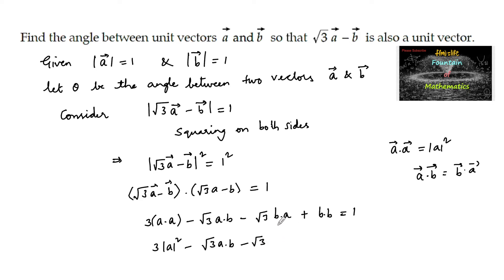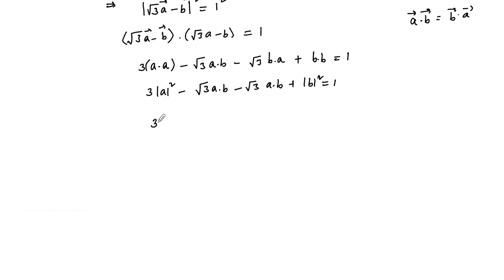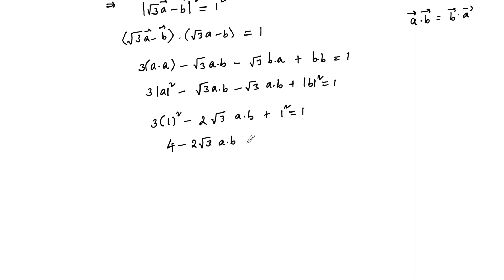Since b·a and a·b are the same, we write: 3(a·a) - 2√3(a·b) + |b|² = 1. Since |a| = 1 and |b| = 1, this becomes 3(1)² - 2√3(a·b) + (1)² = 1, that is 3 + 1 = 4, so 4 - 2√3(a·b) = 1.